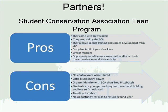Some cons of the SCA relationship: we have no control over who is hired; the kids don't always know what they're getting into — they're doing stewardship work outside all summer long; even though discipline is taken off our shoulders, we also have little disciplinary power; there's often a greater identity with the SCA than with Tree Pittsburgh since they wear SCA clothing; students are younger, require more hand-holding, and are sometimes less self-motivated since for most this is their very first work experience; the timeline is very short — often only eight to ten weeks; there's no opportunity for the kids to return a second year; and they often come from all over the city and work in neighborhoods unfamiliar to them.